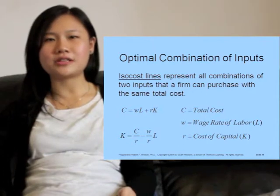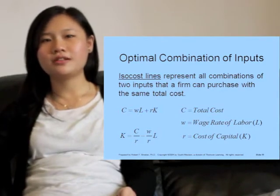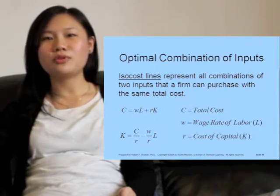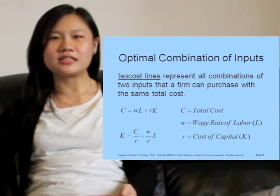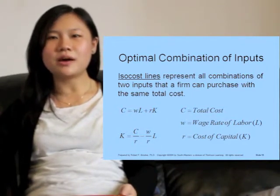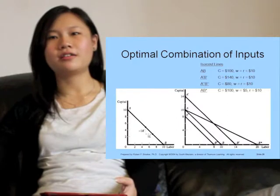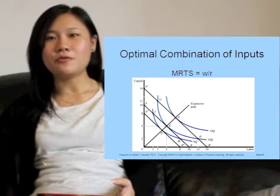An isocost line represents various combinations of two inputs that a firm can purchase with the same total cost. Total cost equals the wage rate of labor multiplied by the quantity of labor used, plus the rental price of capital multiplied by the quantity of capital used. C divided by R is the vertical intercept of the isocost line, and negative W divided by R is its slope. This shows isocost lines from different combinations of C, W, and R. The optimal input combination is given by points D, E, and F, where each isoquant is tangent to each isocost.